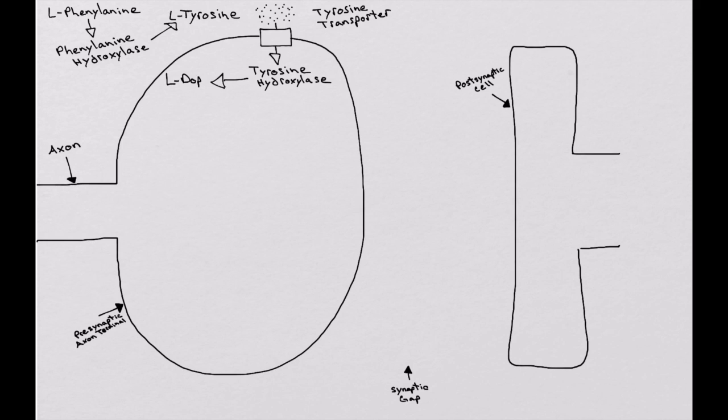The levodopa is then converted and broken down even further by L-aromatic amino acid decarboxylase. We also know this as dopa decarboxylase, and sometimes you'll just see it as aromatic amino acid. It's written a number of different ways depending on what source you're looking at.